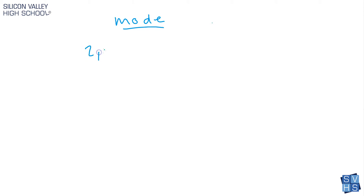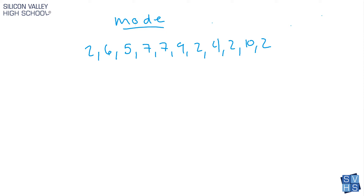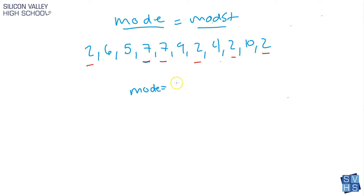Everybody loves mode because it's by far the easiest to find. Given a data set like two, six, five, seven, seven, nine, two, four, two, ten, two — deliberately out of order — for mode you don't need to sort it. You're just looking for the value that appears the most. Seven appears twice, but two appears four times. No other value competes, so the mode is two. That's literally all you do: find whichever value repeats the most.